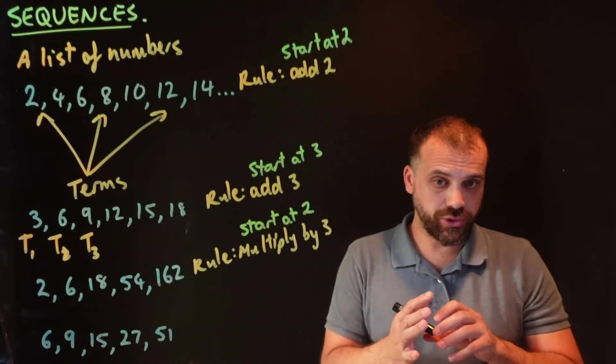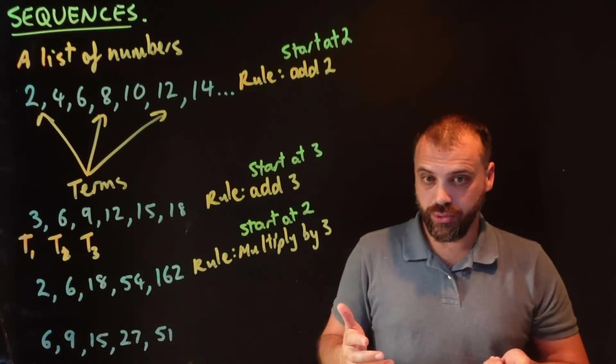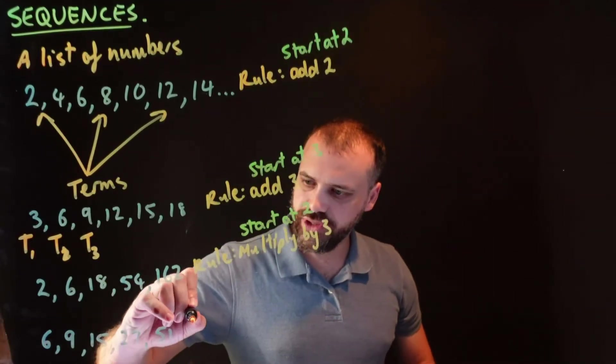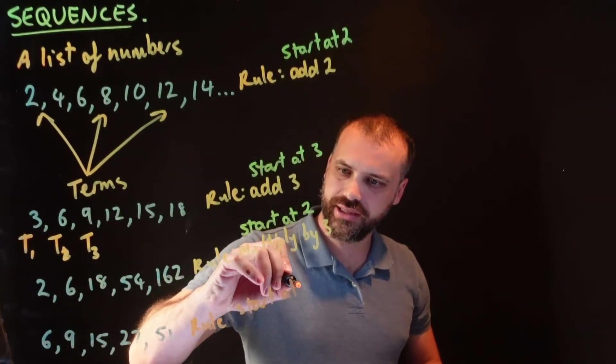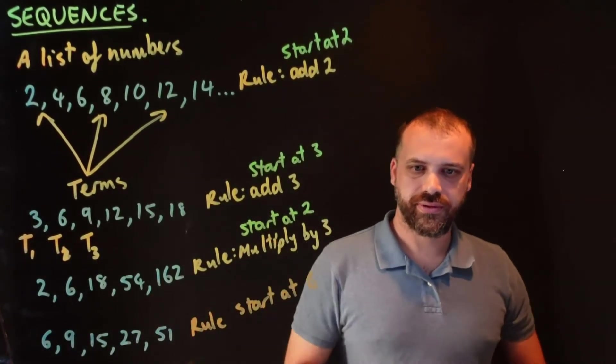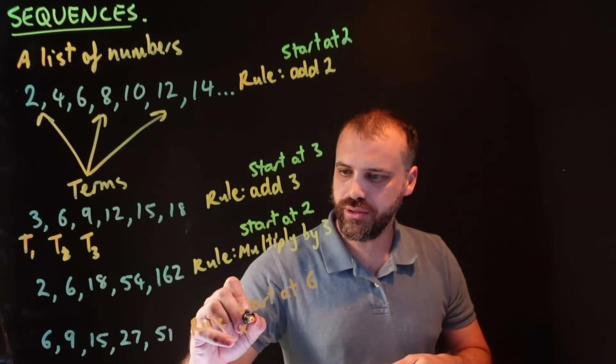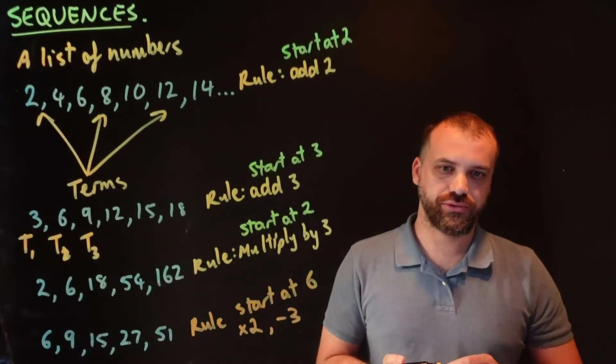We can make this a bit more complicated. Look at this sequence here, 6, 9, 15, 27, 51. You could pause the video and try to figure out what's going on there. All right, so the rule for this one is start at 6, and then 2 different things. Multiply by 2 and then minus 3.